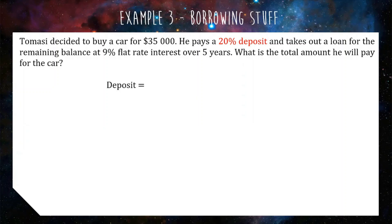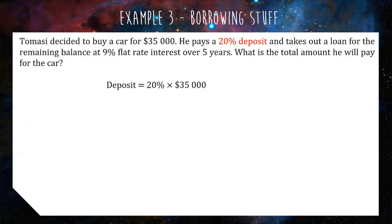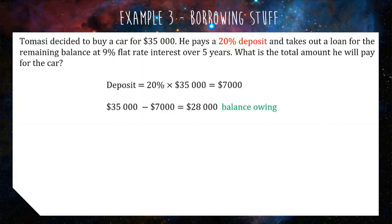It's 20% of the cost price of the car, so we do 20% of $35,000 — multiply those together — and we get $7,000. Now, for the interest calculation, we need to take the $7,000 away from the $35,000 to get what's left over, because he's only going to take out a loan for what's left to pay after the deposit. So $35,000 minus the $7,000 deposit gives us $28,000 — the balance owing. This is how much he has to pay off with his loan, so this is what we calculate his interest on. That's probably the biggest trick to this question that a lot of people forget.